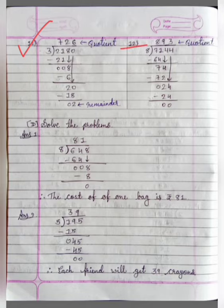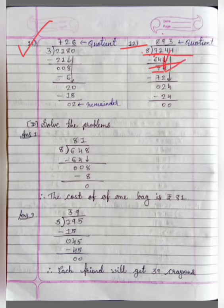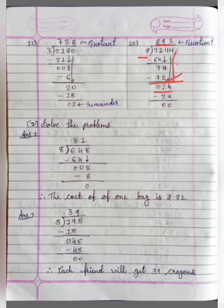Number 12: 7,144 divide by 8. 8 eights are 64. 71 minus 64 is equal to 7. We will bring down this 4 here. 8 nines are 72. 74 minus 72 is equal to 2. Bring down 4 here, so now we have 24.